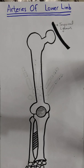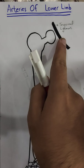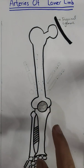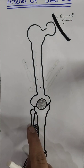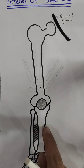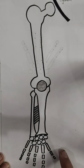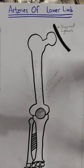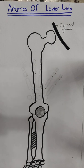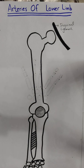Today we are going to discuss the arteries of the lower limb. First we must know about this figure: this is the inguinal ligament, this is the femur, this is the patella bone, this is the tibia bone, this is the fibula, this is the interosseous membrane between these two bones, and these are the tarsal bones, the metatarsals, and the phalanges. The main arteries of the lower limb are the femoral artery, the popliteal artery, the anterior and posterior tibial arteries, the dorsalis pedis artery, and the medial and lateral plantar arteries.